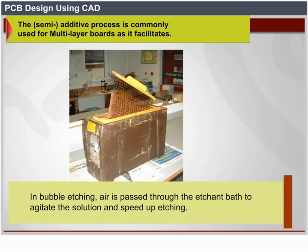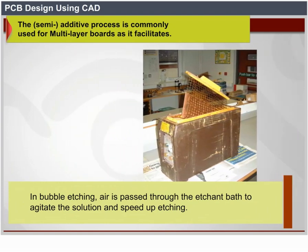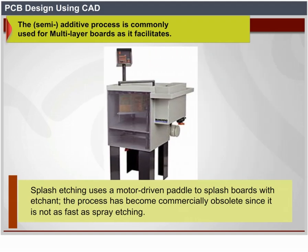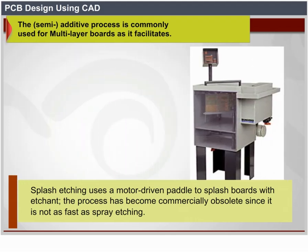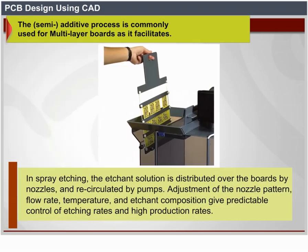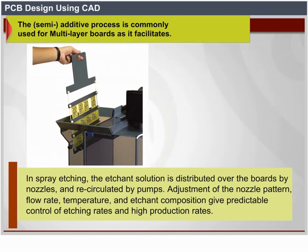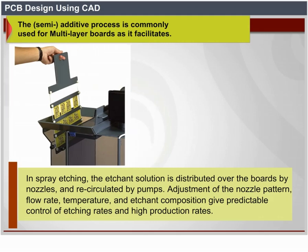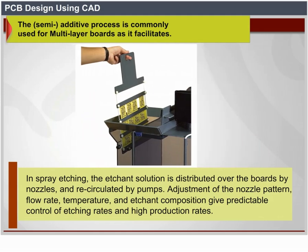In bubble etching, air is passed through the etchant bath to agitate the solution and speed up etching. Splash etching uses a motor-driven paddle to splash boards with etchant, but has become commercially obsolete since it is not as fast as spray etching. In spray etching, the etchant solution is dispersed over the boards by nozzles and recirculated by pumps; adjustment of nozzle pattern, flow rate, temperature, and etchant composition gives predictable control of etching rates and high production rates.